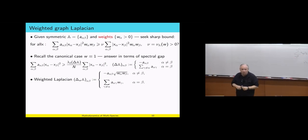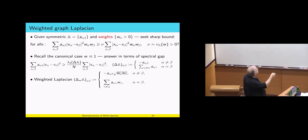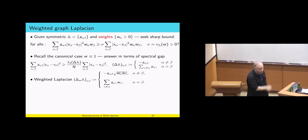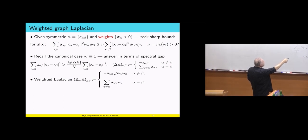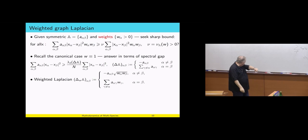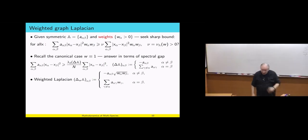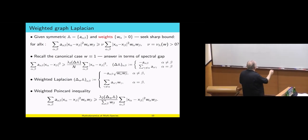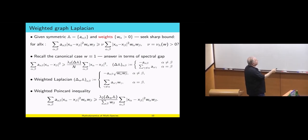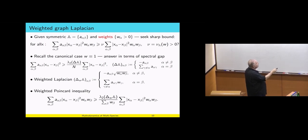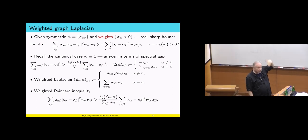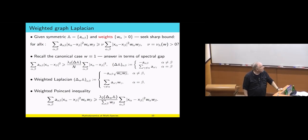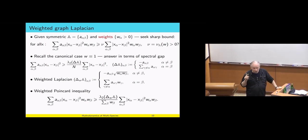I claim we have a Poincaré inequality attached to the second eigenvalue of the weighted Laplacian. This matrix has real eigenvalues; lambda 1 is always 0, and depending on whether lambda 2 is 0 or not, this is the best estimate. Notice this estimate depends on the sum of the weights but not on the condition number — it depends only on the total mass, which is usually invariant in our problem.